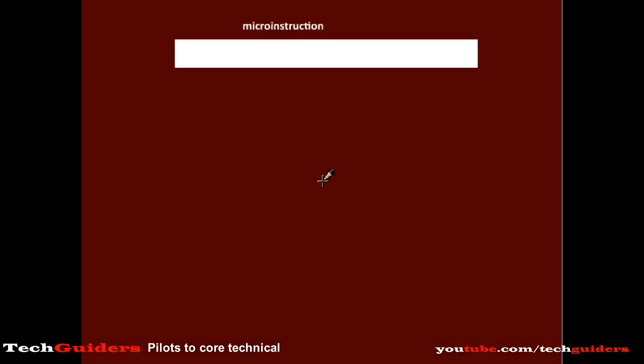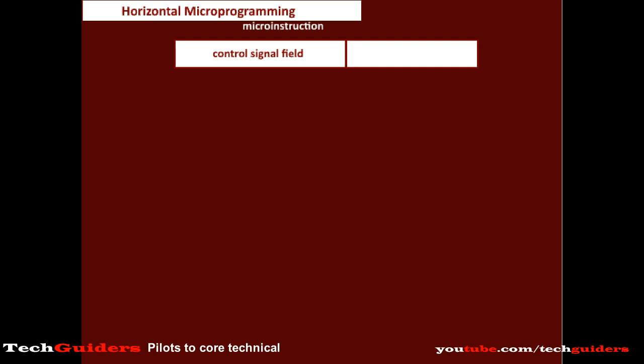First, let's see what is in the micro instruction that leads to the generation of the control signals. The micro instruction consists of various fields, and there is one field called the control signal field which leads to the generation of the control signals. There are two basic approaches for the control signal field: one is the horizontal approach and the other is the vertical approach.